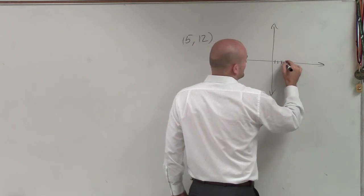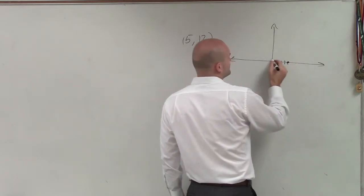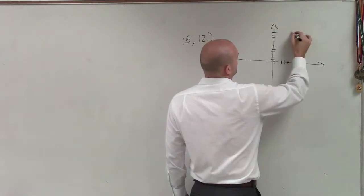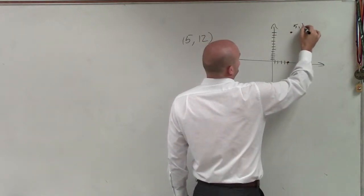So I'm going to go over 5: 1, 2, 3, 4, 5. And then I need to go up 12: 1, 2, 3, 4, 5, 6, 7, 8, 9, 10, 11, 12. All right, so that's my point 5 comma 12.